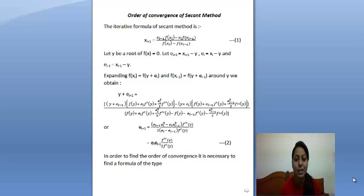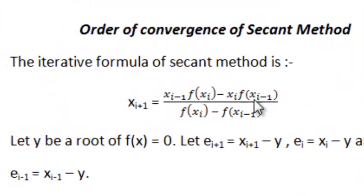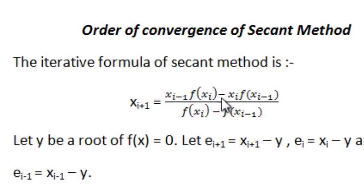I am Hemanshan Igam from IIPS and DAVV University, and here I am explaining how to calculate the order of convergence of the secant method, which is an iterative method. The iterative formula of the secant method says that x of i plus 1 is equals to x of i minus 1 into f of x_i, minus x_i into f of x_(i minus 1), divided by f of x_i minus f of x_(i minus 1).